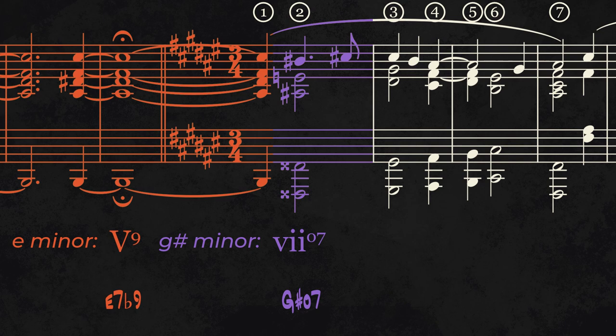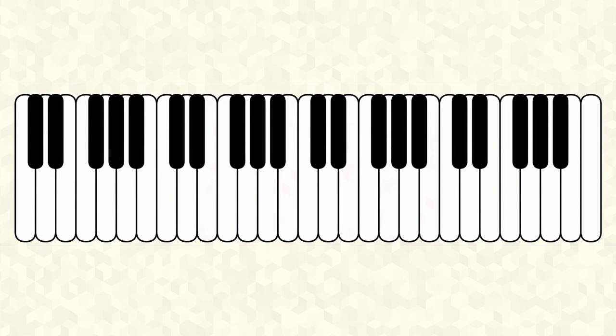So how did Liszt modulate a considerable distance around the circle of fifths in just one chord? Well, take another listen to the regular tonic resolution of the dominant 9th, and compare it to Liszt's resolution.